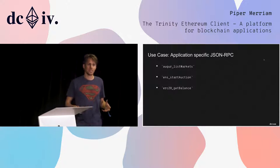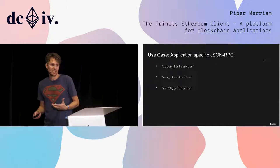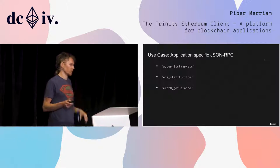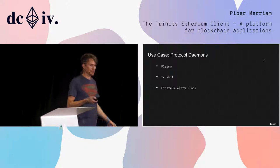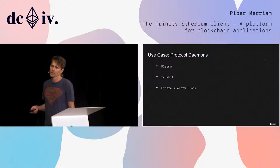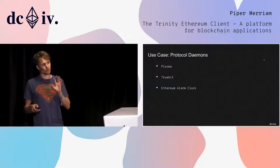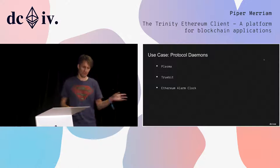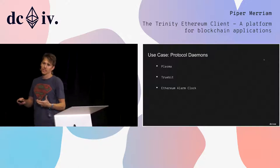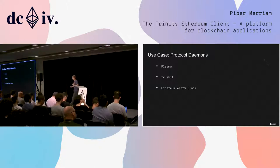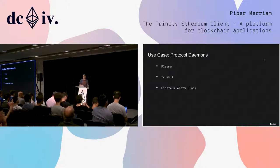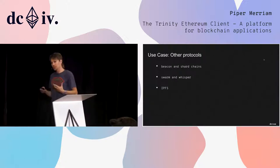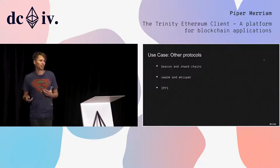One of the use cases we see is the ability to expose new JSON RPC endpoints to your users through our client. Another thing — I don't know if I made this word up — but protocol daemons. A lot of protocols have a need for an off-chain actor to perform some actions. These are often shipped as their own binary and you have to link it up to a running Ethereum node. We foresee packaging these up as a plugin as a much better user experience. Anybody who's already running the Trinity client, it's going to be a one-click install type thing and they can onboard to your protocol.